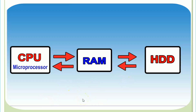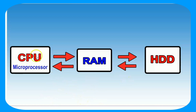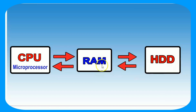See the diagram: we have the microprocessor, RAM, and hard disk. Hard disk is secondary memory. RAM is main memory. CPU is the microprocessor.